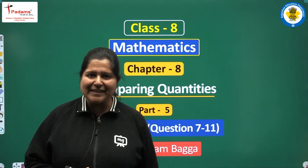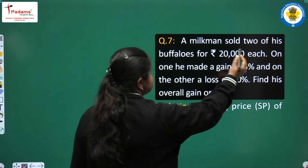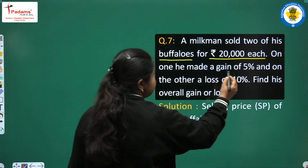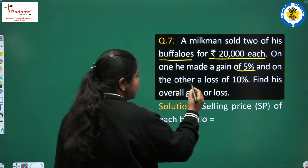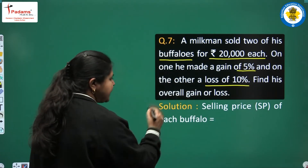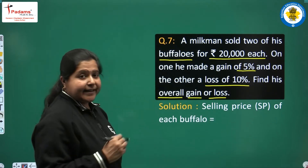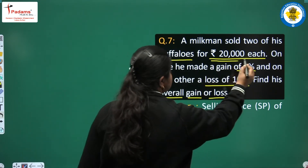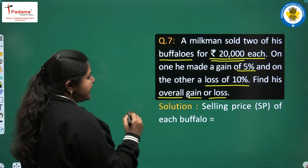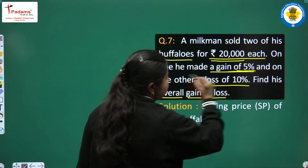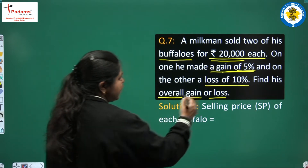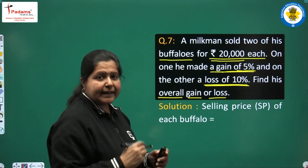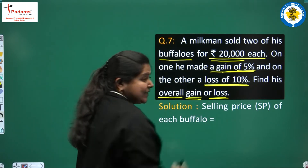We begin with question number 7. A milkman sold two of his buffalos for Rs. 20,000 each. On one he made a gain of 5% and on the other a loss of 10%. Find his overall gain or loss. Here a milkman is selling his two buffalos. Both buffalos are sold for Rs. 20,000 each. The first buffalo has a gain of 5% and in the second buffalo's case, loss is 10%. We have to find the overall gain or loss.